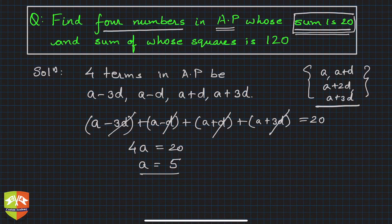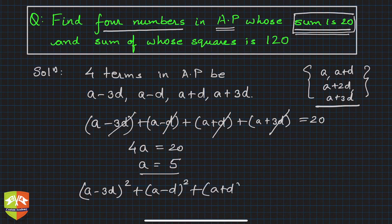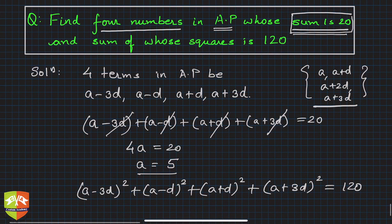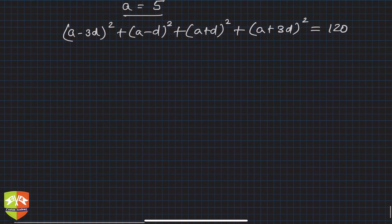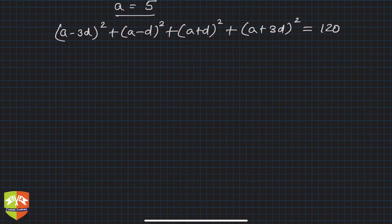Sum of whose square: what is the square of these terms? a minus 3d whole square plus a minus d whole square plus a plus d whole square plus a plus 3d whole square, and this is given to be equal to 120.